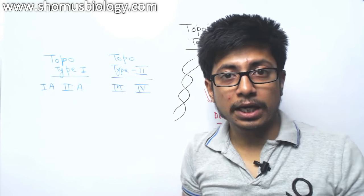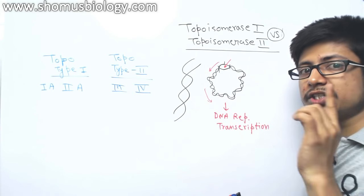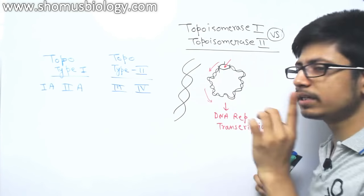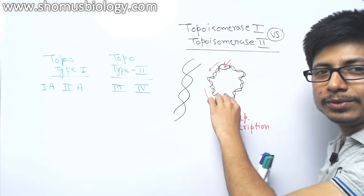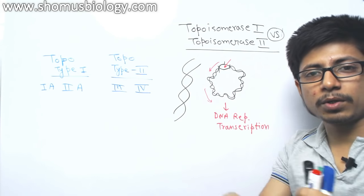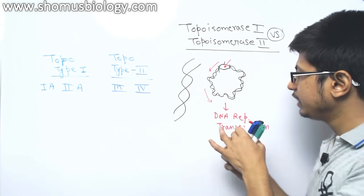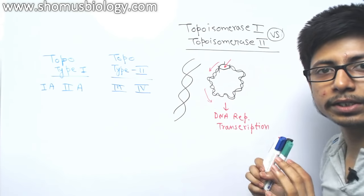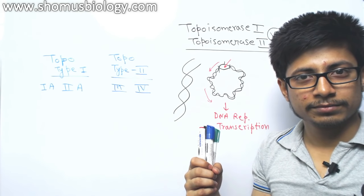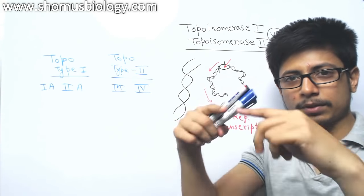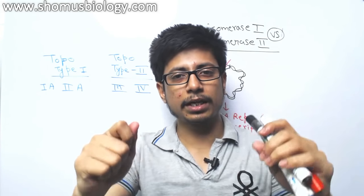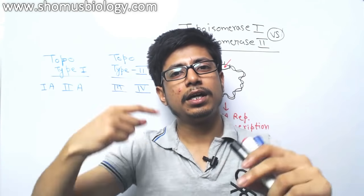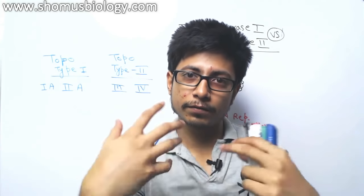What is the solution? The only way to release this tension is to cut the DNA somewhere. If you cut at least one strand of the DNA, it can release the tension. Think of this like a telephone wire — it is already twisted, and if you keep twisting it again and again, you will see it winding on itself again, forming a knot.